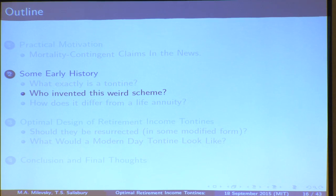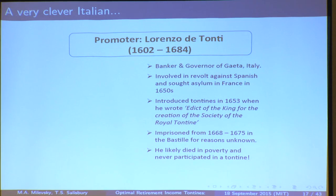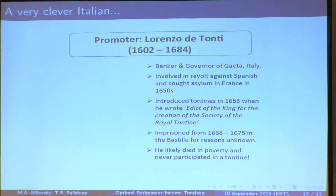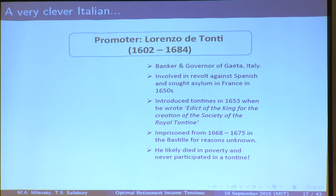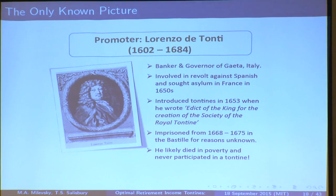Who invented this bizarre scheme? His name is Lorenzo de Tonti — hence the name Tontine. He was a governor in Italy, involved in a revolt against the Spanish, sought asylum in France. He writes something called an Edict of the King for the Creation of the Society of the Royal Tontine, proposing this to Louis XIV. He's thrown into the Bastille, dies in poverty, and he never participated in a tontine. I was able to uncover the only known picture of this fellow — here's Lorenzo Tonti.